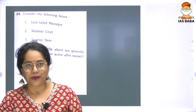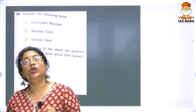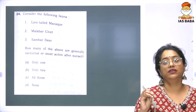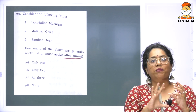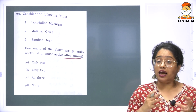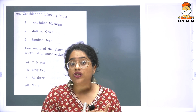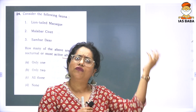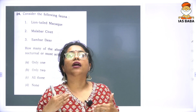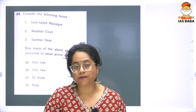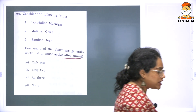Moving forward, the second question is about the lion-tailed macaque, Malabar civet, and sambar deer. The question asks: how many of them are generally nocturnal or most active after sunset? Here again, I notice UPSC has bothered to ask about a specific feature of an organism. When I learn any organism, the major features include what it eats, how it reproduces, what its general activity pattern is, and its level of conservation. What it eats and its daily routine are emerging trends in recent UPSC questions.